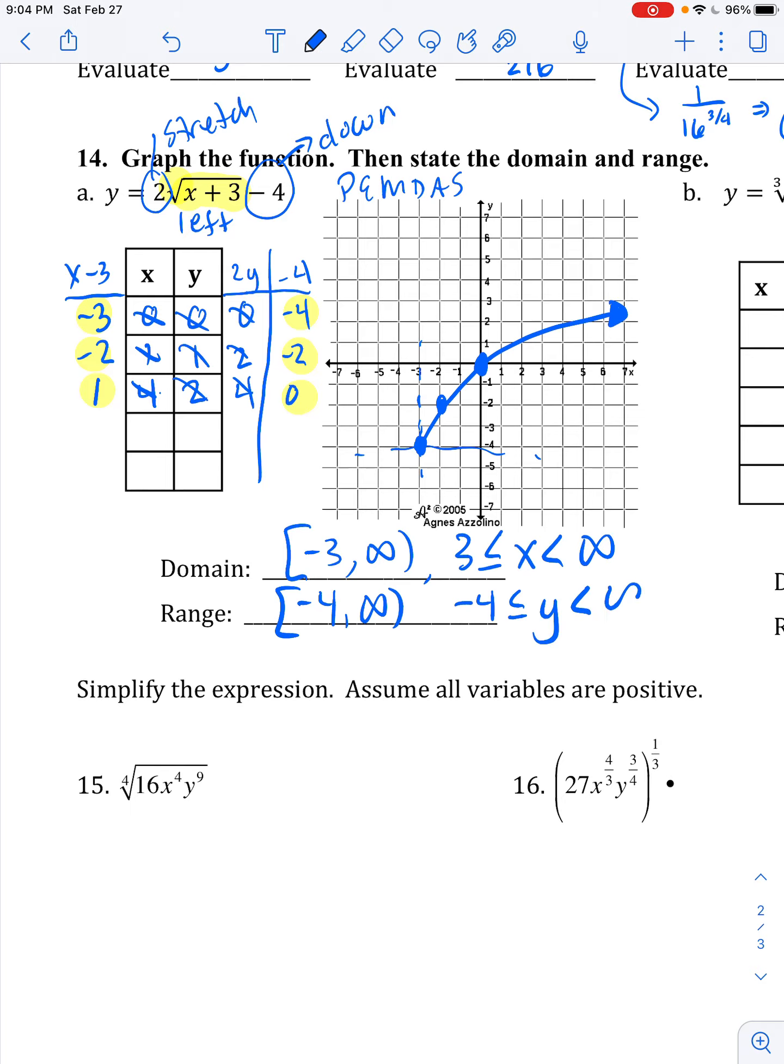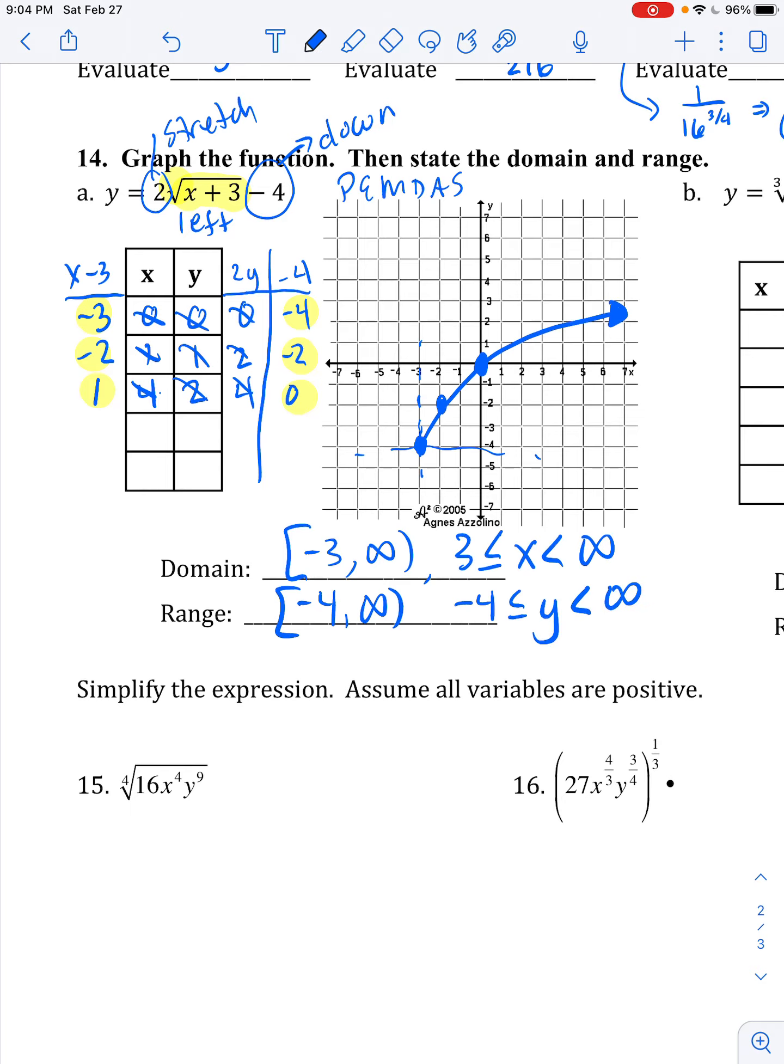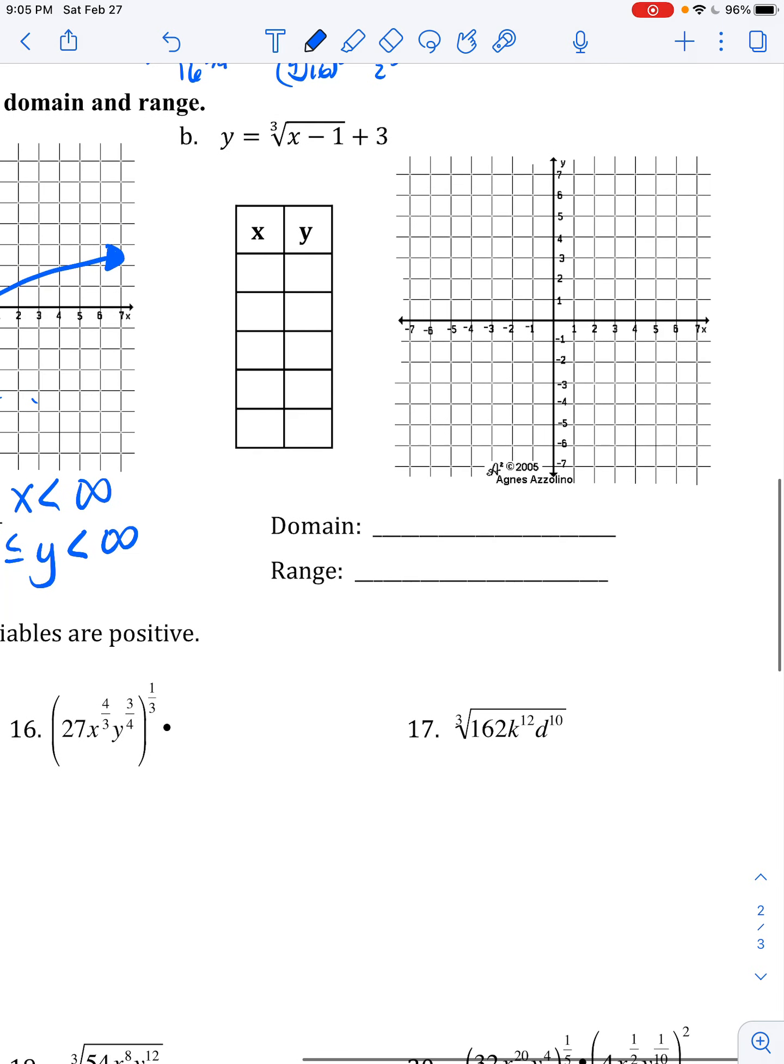We do the same process here, but because this is a cube root we start with a different set of numbers. We start with -8, -1, 0, 1, 8 because we know they're cubes and they're nice whole numbers, easy to work with. What changes will take place? Well, this is on the outside and so that's going to add to our y's.